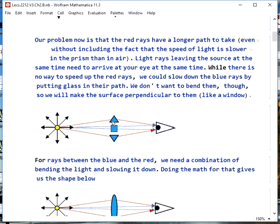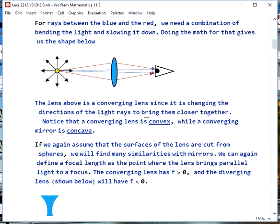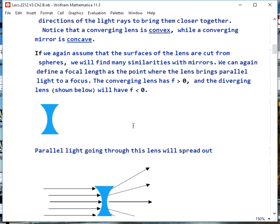There's also going to be some rays in the middle here that have to be both slowed a little bit and bent a little bit. If we do the math for what shape of lens will do this, we get the converging lens. Notice that this is converging because it's bringing this light that's spreading out back down to a point. It's also convex, while converging mirrors are concave. If we assume that we're making these lenses by cutting sections out of spheres again, we find a lot of similarities with the mirrors.